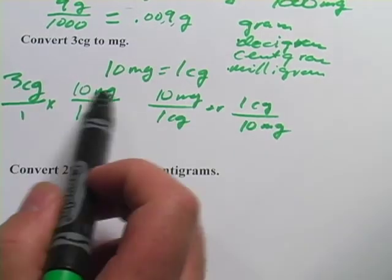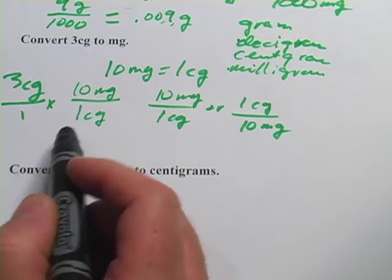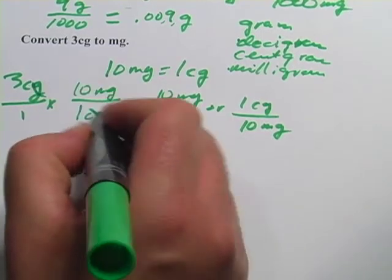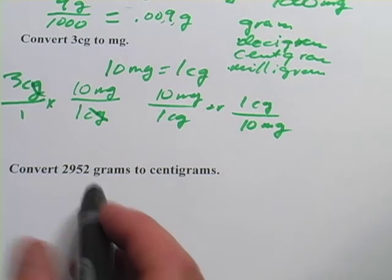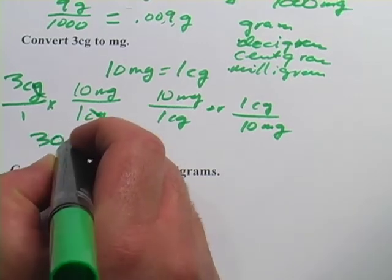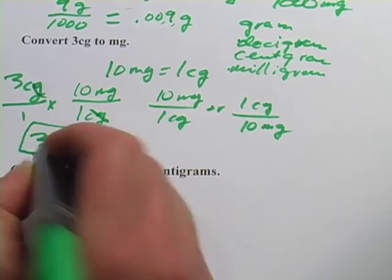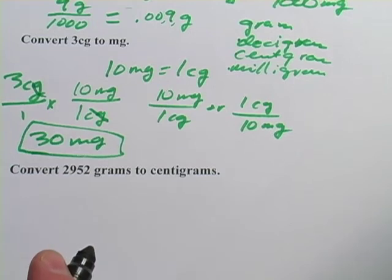Across the top, 3 times 10 is 30. Across the bottom, 1 times 1. The centigrams cancel. We're left with milligrams. And we get 30 milligrams in 3 centigrams.